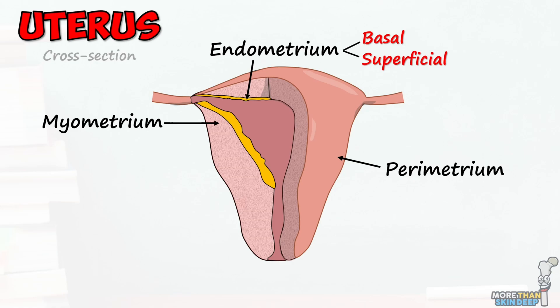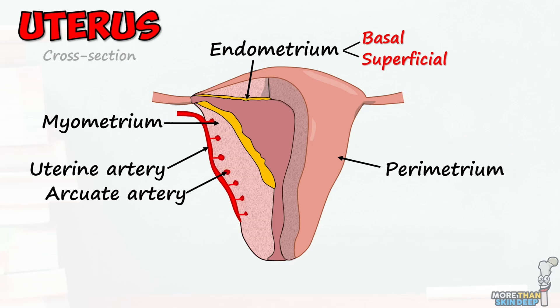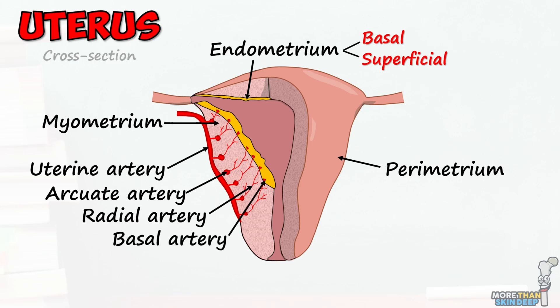The endometrium then regenerates again from the basal layer. In this cross-section, we can see that the arteries supplying the uterus have a complex structure. As the vessels enter the myometrium, they first branch and anastomose as arcuate arteries, then radial arteries. Within the endometrium, they produce long basal arteries and deep penetrating spiral arteries, which travel towards the most superficial parts of the endometrium.